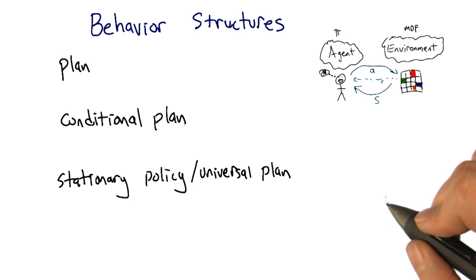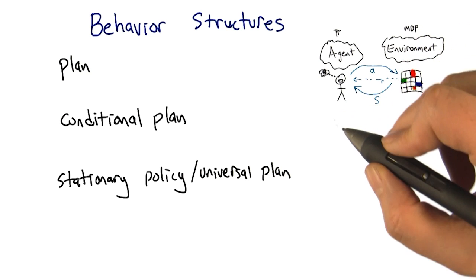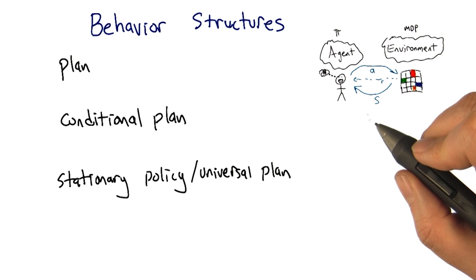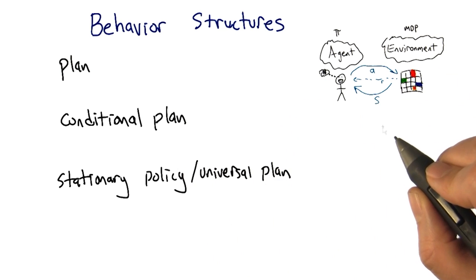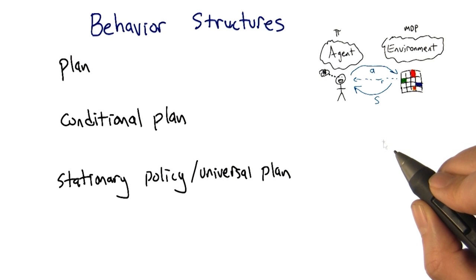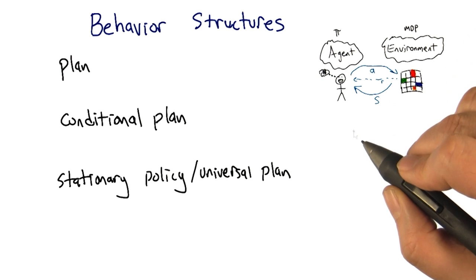So our goal is going to be to try to create learning algorithms that are not quite as smart as you were in that example. But, you know, trying to approximate that. Getting as far along the rock to Charles continuum as we possibly can. Okay. We want algorithms that are Charles complete.